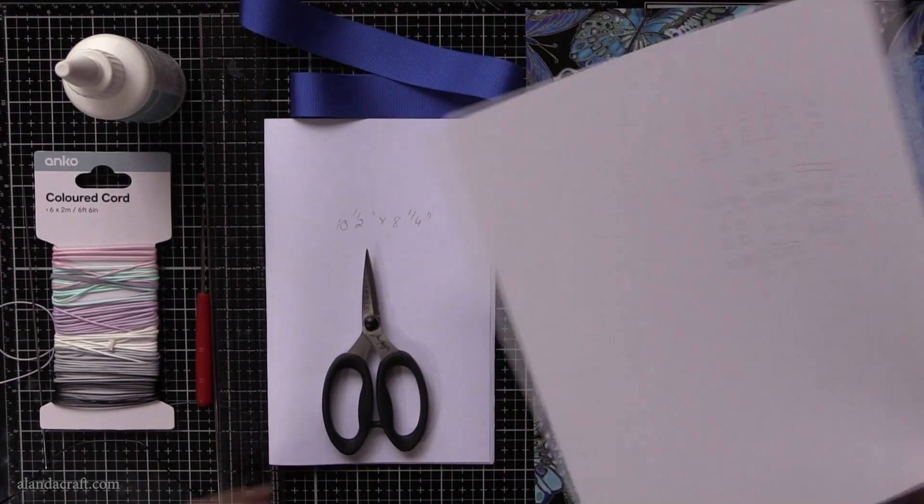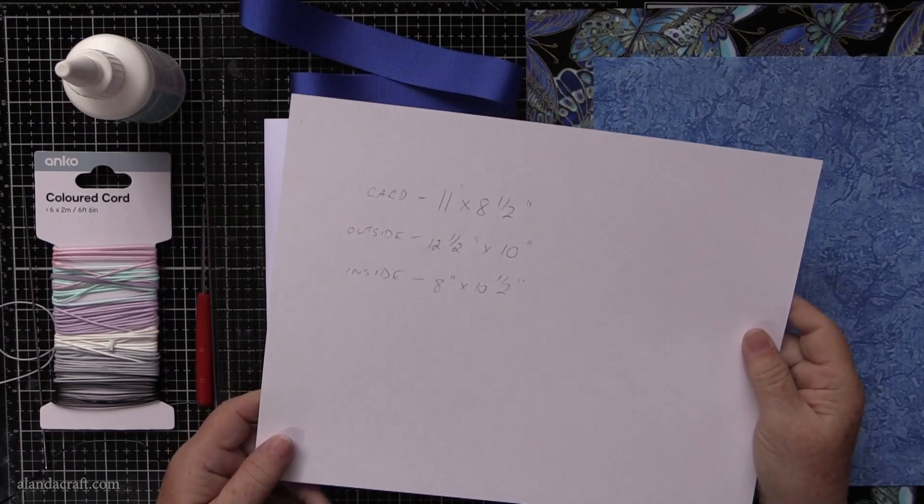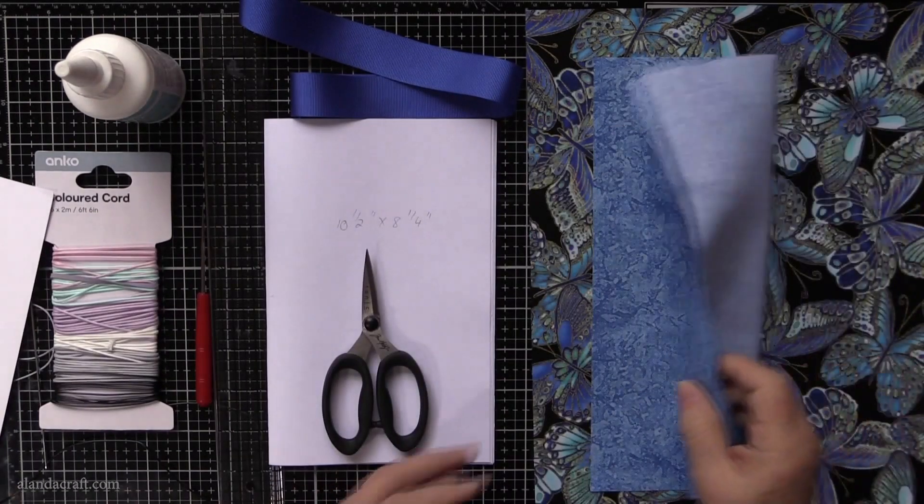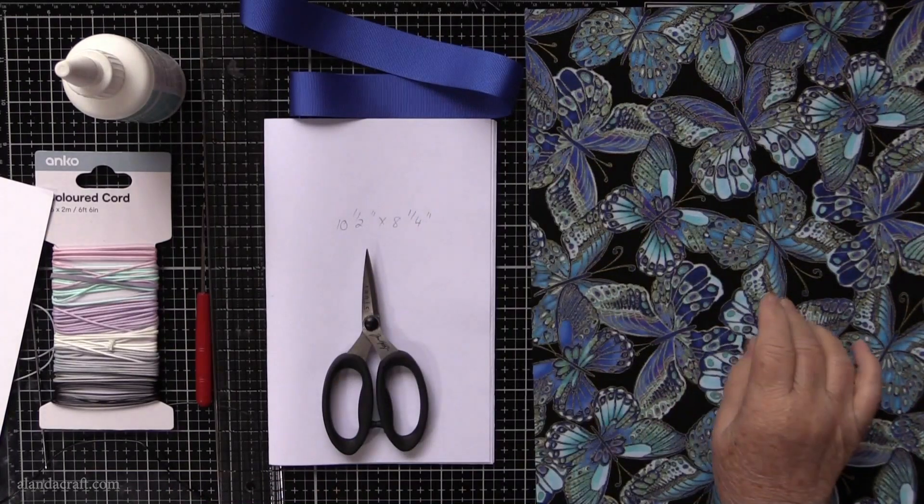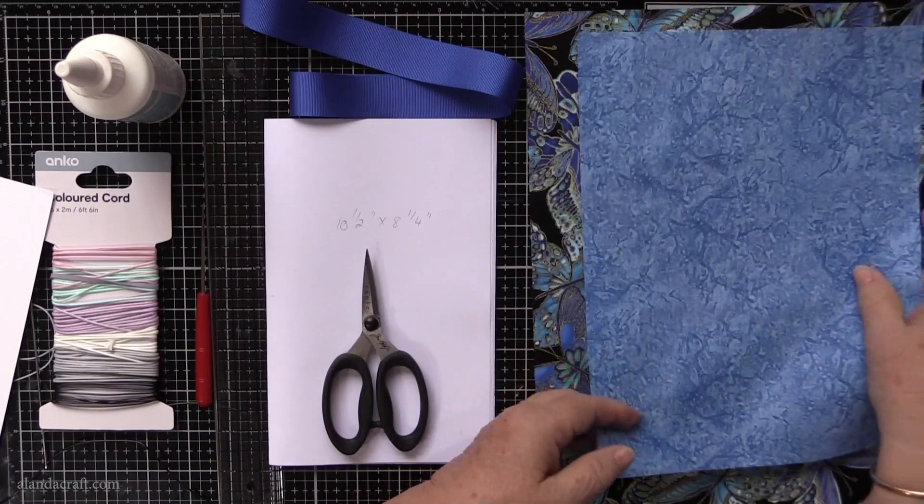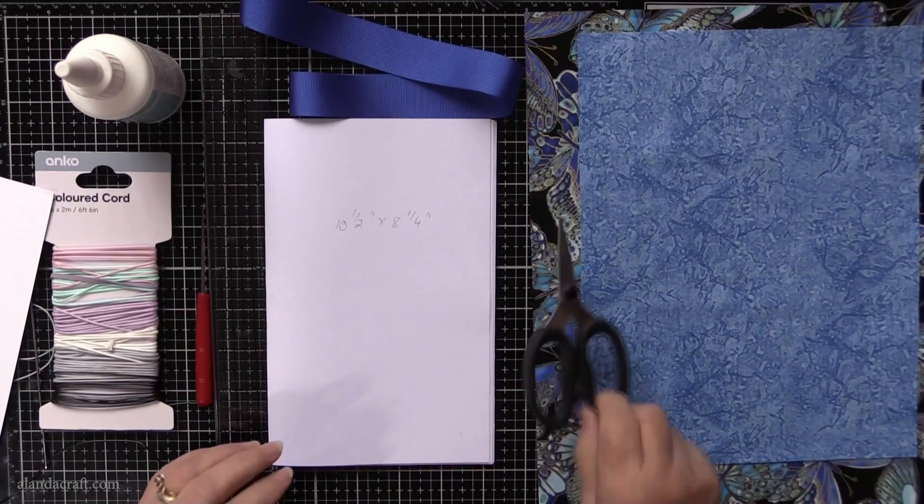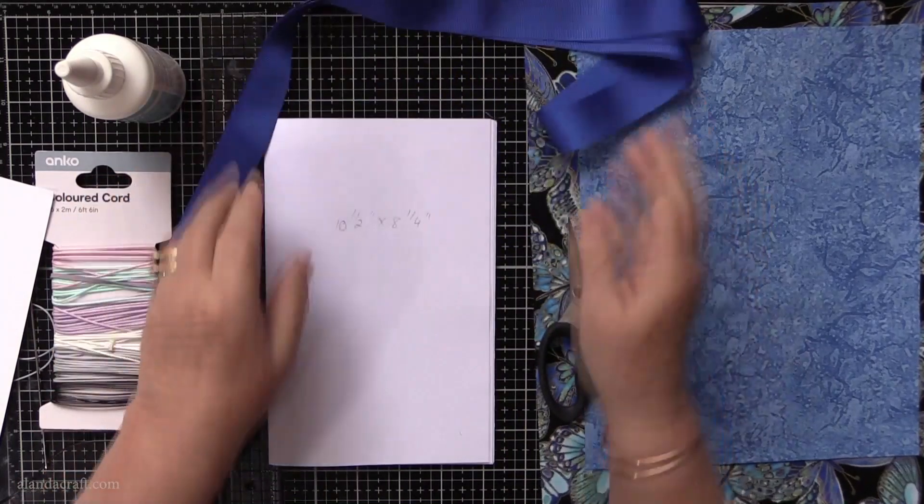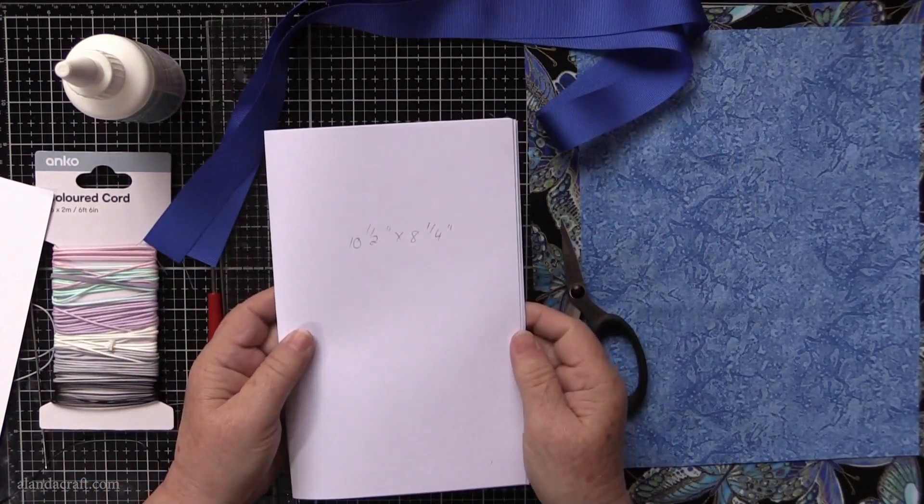Here's what you're going to need. You'll need a piece of cardstock measuring 11 by 8 and a half. You're also going to need two pieces of fabric - one is going to measure 12 and a half by 10, and the other piece will be 8 by 10 and a half. You'll also need some scissors, some ribbon - I have about 40 inches of ribbon here - and plain paper that measures 10 and a half by 8 and a quarter.